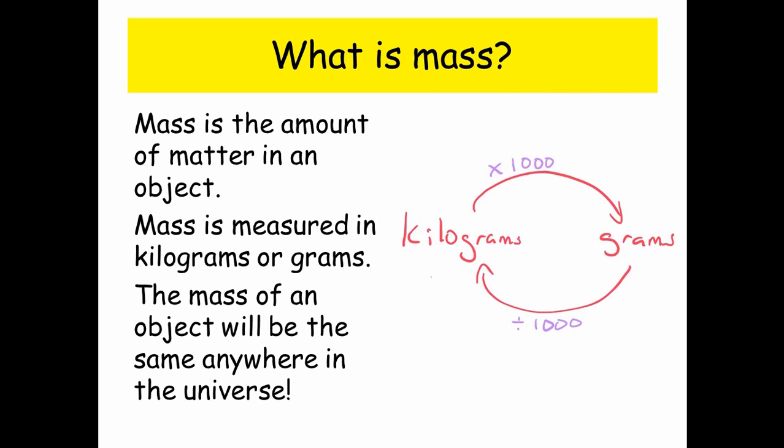Now to convert from kilograms to grams you times by a thousand, and to go from grams to kilograms you divide by a thousand.